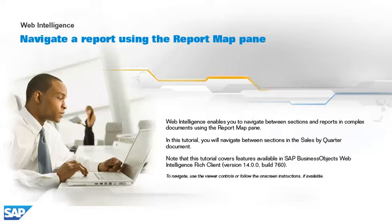Web Intelligence enables you to navigate between sections and reports in complex documents using the Report Map pane. In this tutorial, you will navigate between sections in the Sales by Quarter document. Note that this tutorial covers features available in SAP Business Objects Web Intelligence Rich Client, version 14.0.0, build 760. To navigate, use the Viewer controls or follow the on-screen instructions, if available.